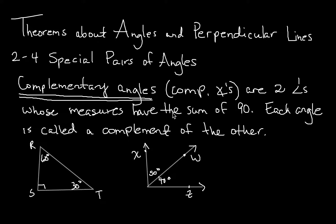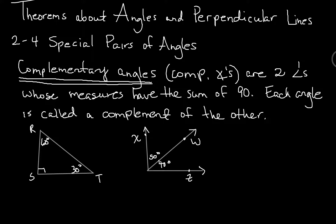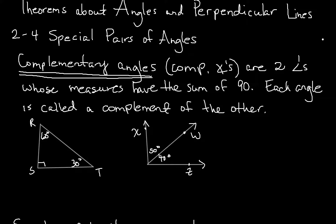Here is a video on Lesson 2-4, called Special Pairs of Angles, in a section called Theorems About Angles in Perpendicular Lines. There are two lessons that go with this and the first one is 2-4. This is a rather simple lesson — I think you'll find it easy. I wrote a lot of this out so if you need to pause to write things down you can. These definitions need to go in your notebook where you keep all your theorems, postulates, and definitions.